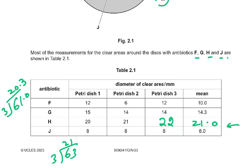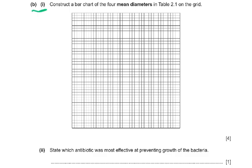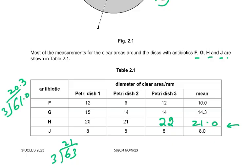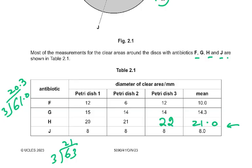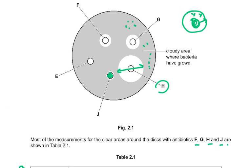Part B1: construct a bar chart of the four mean diameters in Table 2.1 on the grid. This is worth four marks. State which antibiotic was the most effective at preventing growth of the bacteria. That was H, because it had the largest clear space, so H was the most effective antibiotic.